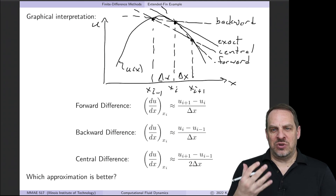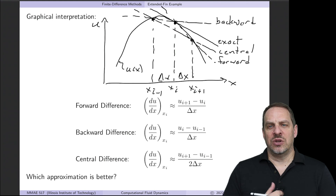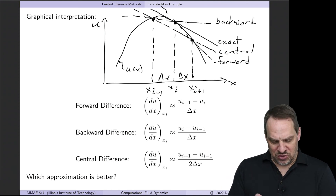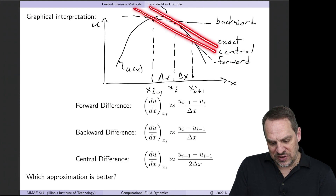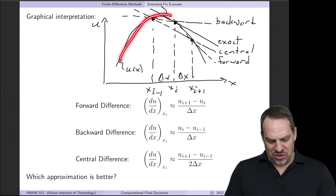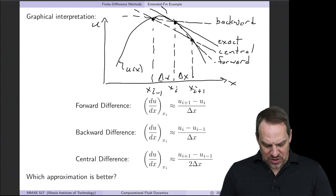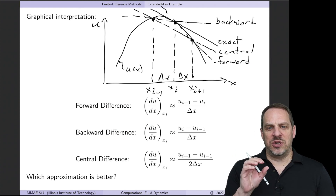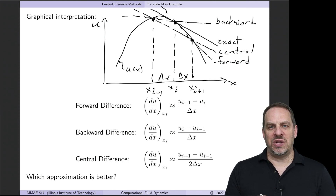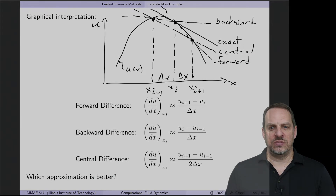We have three different approximations for the same quantity. The question is: which one is better? Just based on the graphical picture, it looks like the central difference is closer to the exact slope, and that is indeed the case. But we need to know how much better it is in a formal sense, and whether that's always true for different functions. Through the Taylor series derivation in the next video, we'll determine how good or bad these approximations are relative to each other, giving us a basis for choosing which ones to use.